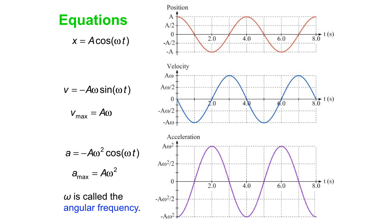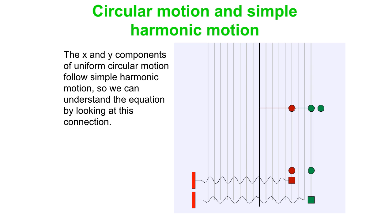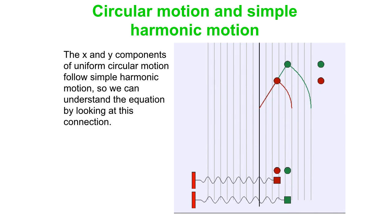Here we have two objects that are going to experience uniform circular motion and two equivalent blocks which are attached to springs. We're going to plot the motion separately, the x and y components of the circular motion separately, to the right and below. What we're going to see is that the x and y components separately of uniform circular motion follow simple harmonic motion, and we can understand the equation by looking at that connection.